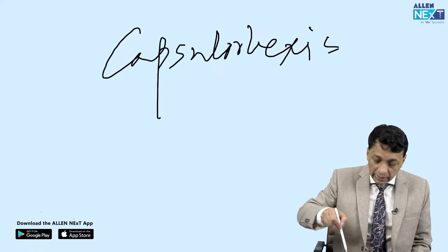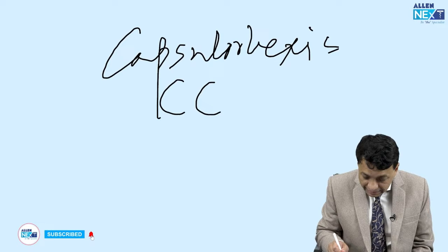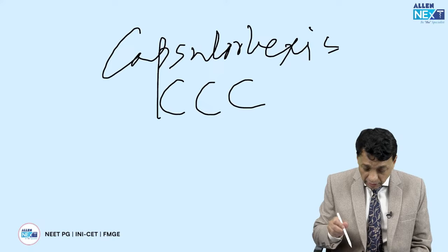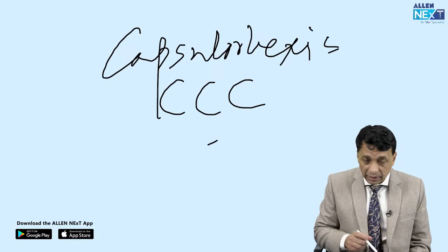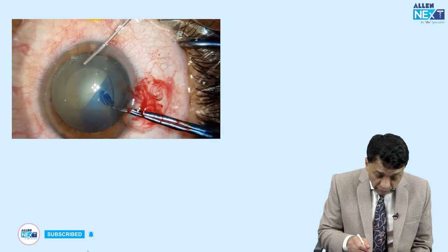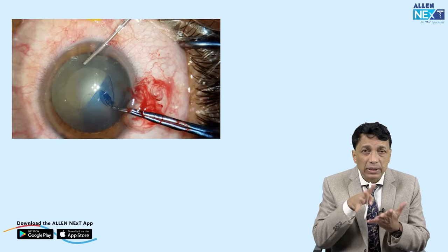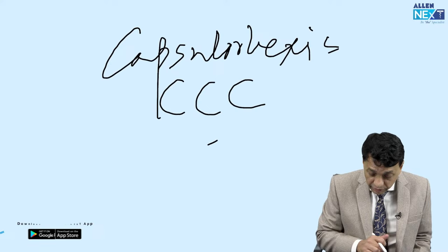Capsulorhexis means tearing the capsule in a single circular motion. The full term is CCC — continuous circular capsulorrhexis — where we tear it off in a single motion, preparatory to taking out the cataract and inserting the IOL. We have to take out the cataract from this opening and implant the IOL so that it forms in the perfect capsular bag.